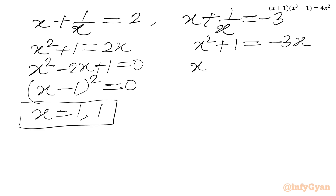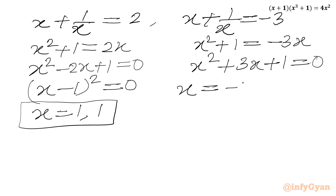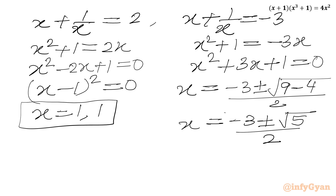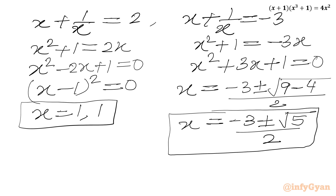For x + 1/x = -3, I will use the quadratic formula. Writing all terms to one side, x = [-(-3) ± √(9 - 4)] / 2 = (-3 ± √5) / 2. So here we have the remaining two solutions. This was method number 1.